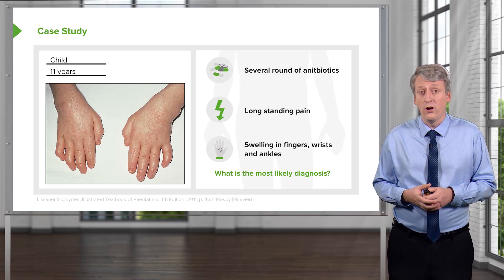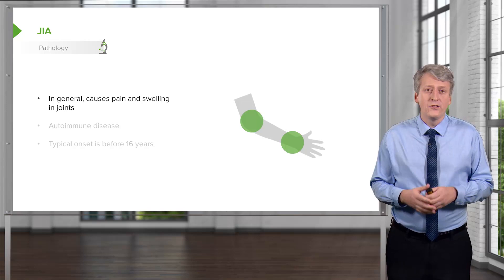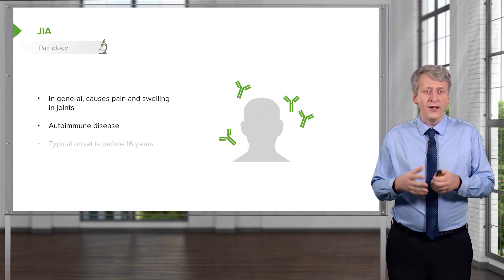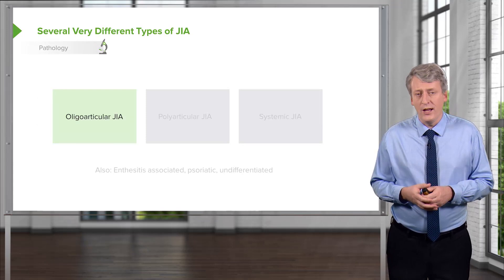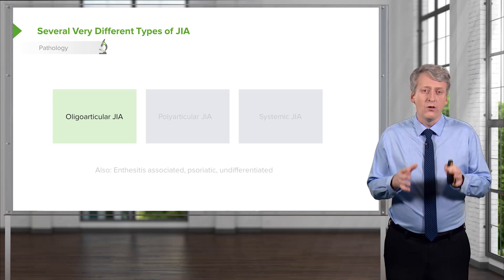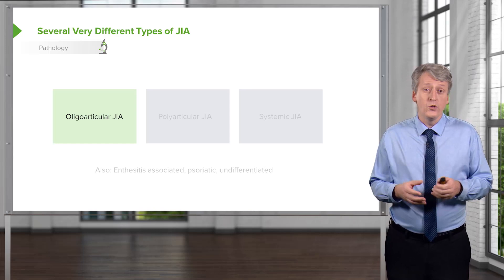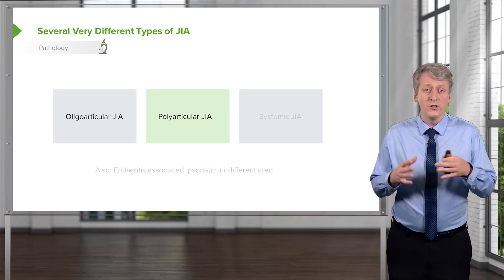JIA causes pain and swelling in the joints. It's an autoimmune disease that primarily affects children, and its typical onset is before 16 years of age. There are three different major types of JIA. The major types likely to show up on an exam are oligoarticular JIA, which usually involves fewer than six joints; polyarticular JIA, which involves multiple joints; and systemic JIA, which may involve a wide variety of systemic symptoms.